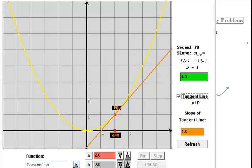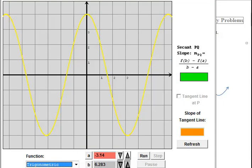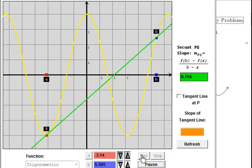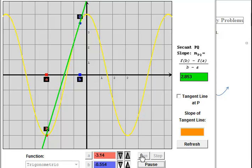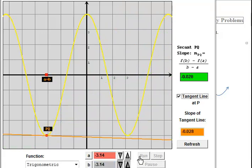Now this process will work no matter what the function is. We could do a trig function, set our P, set our Q, and connect our secant lines. Then drag Q along the curve and we will see that eventually, when Q collides with P, we have a tangent line. This works regardless of the curve, so that's always a nice benefit to have.